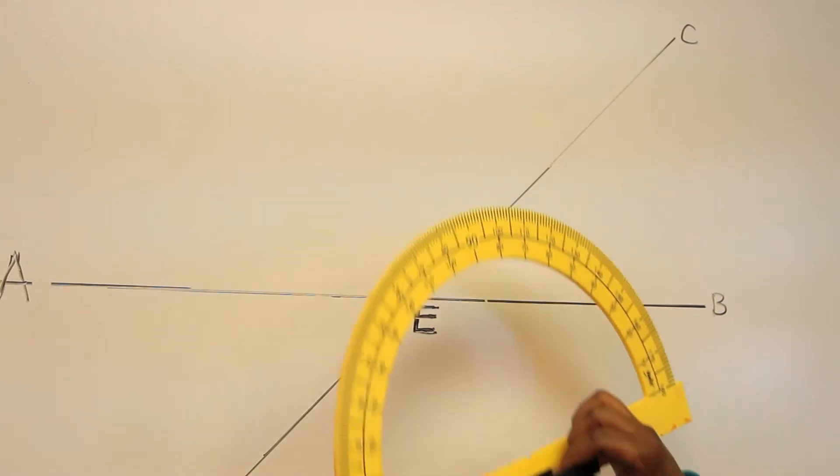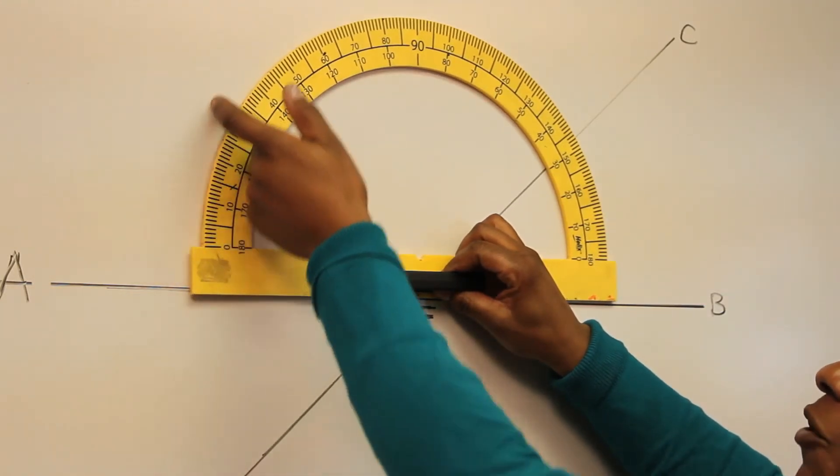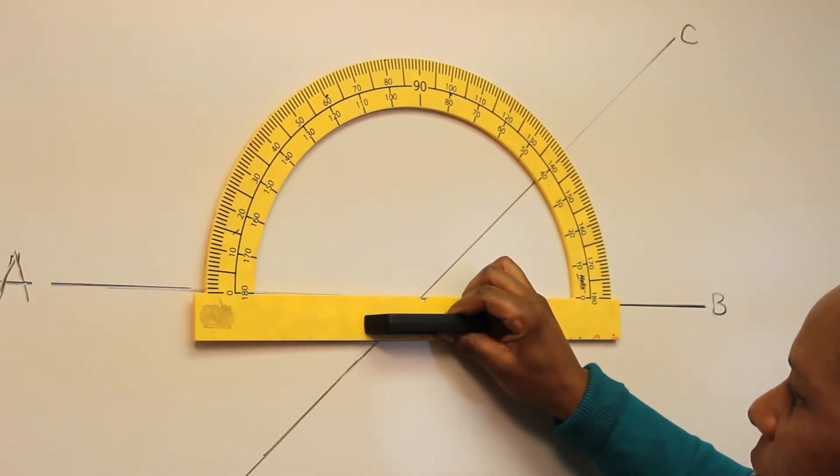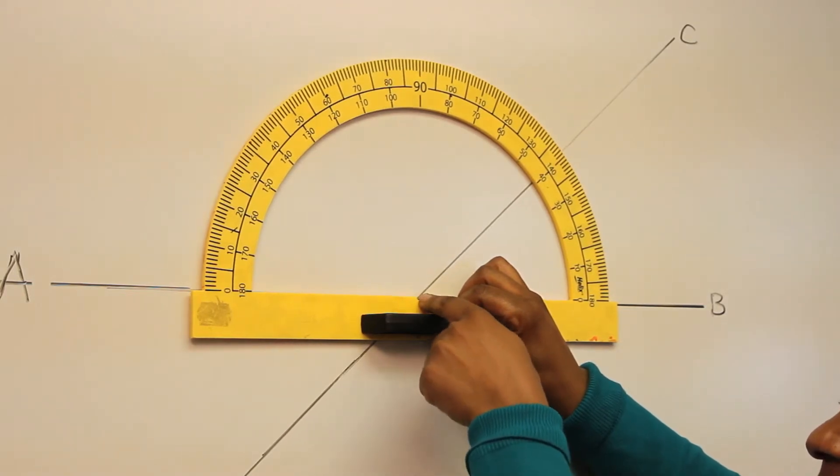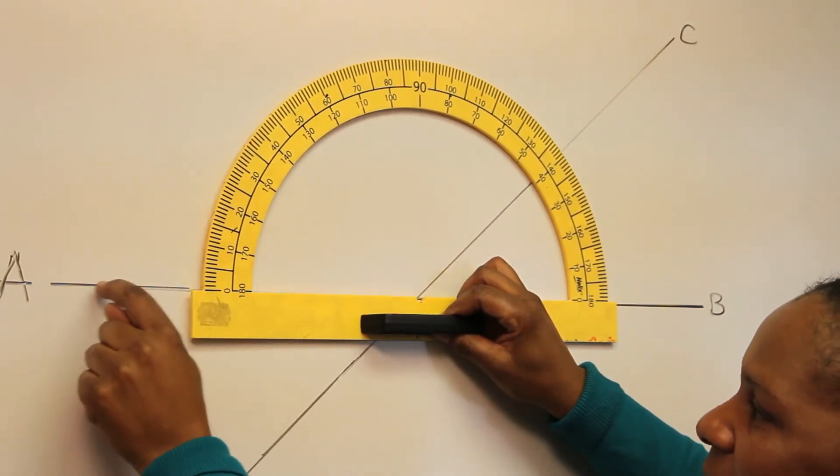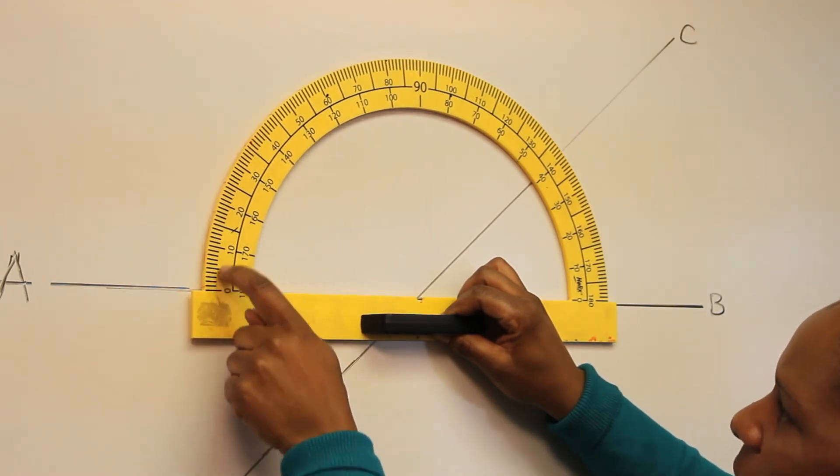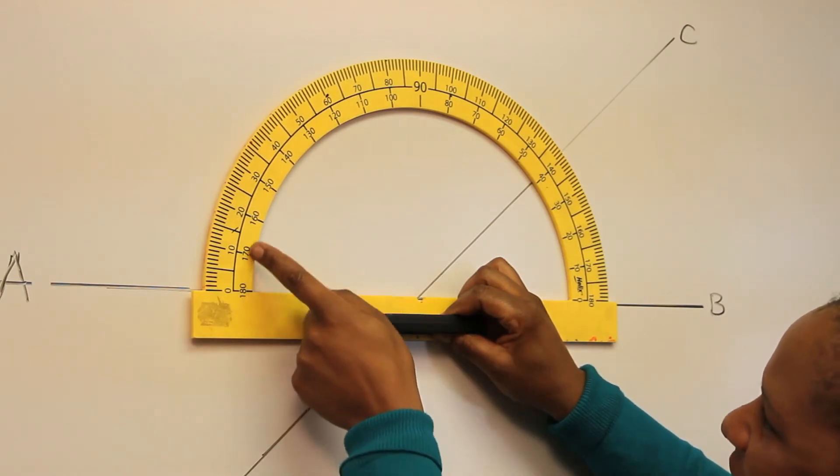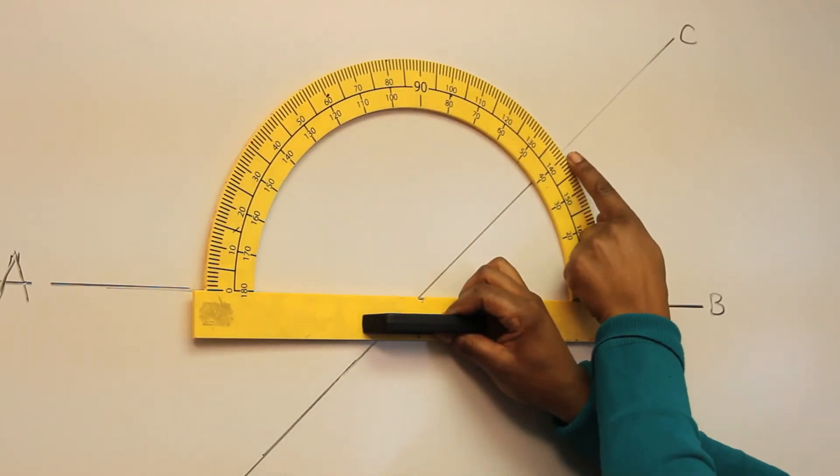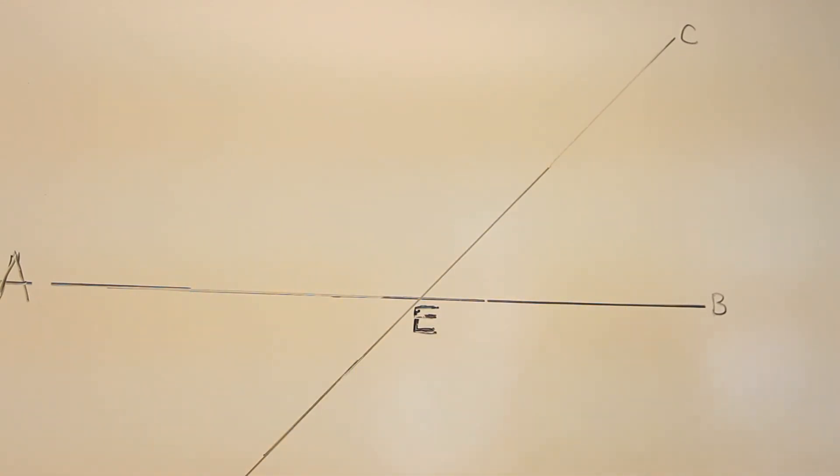If we need to measure angle AEC, we should not place our protractor on top of the line like this because we are not going to measure the angle accurately. But actually, you should place your protractor that way so that the middle point touches exactly at point E, and your 0 is in line with the line A. And you are going to read from 0 in a clockwise direction. You should not use the inside figures which starts from 180. So going in that direction, our angle is 140 degrees. So angle AEC is equal to 140 degrees.